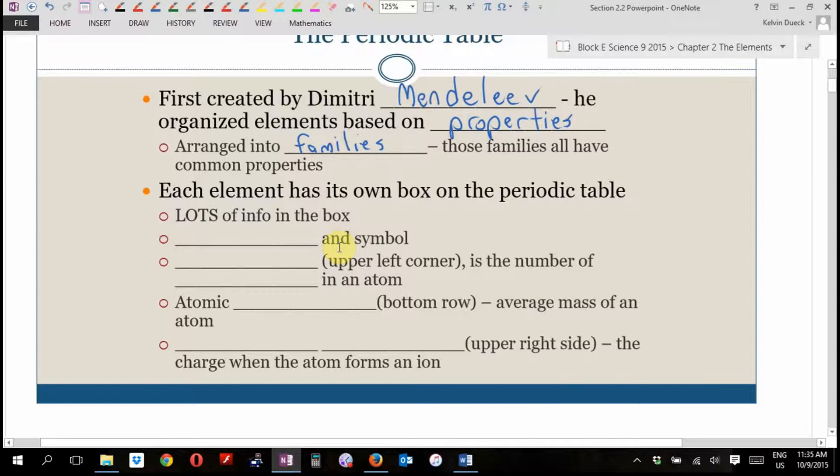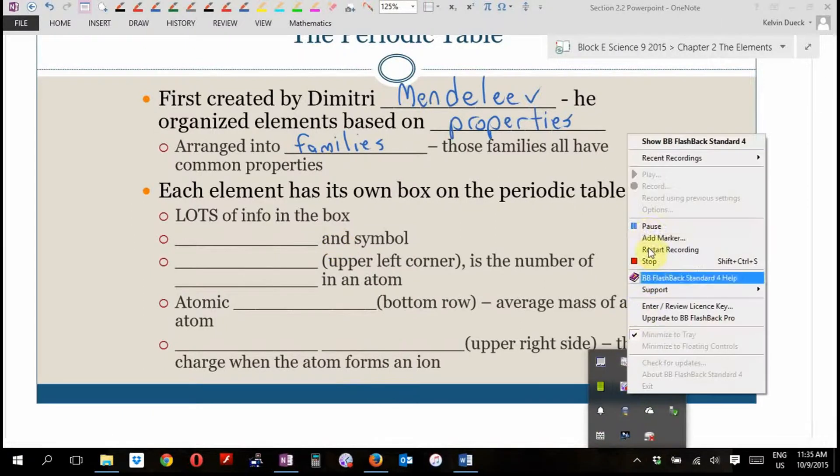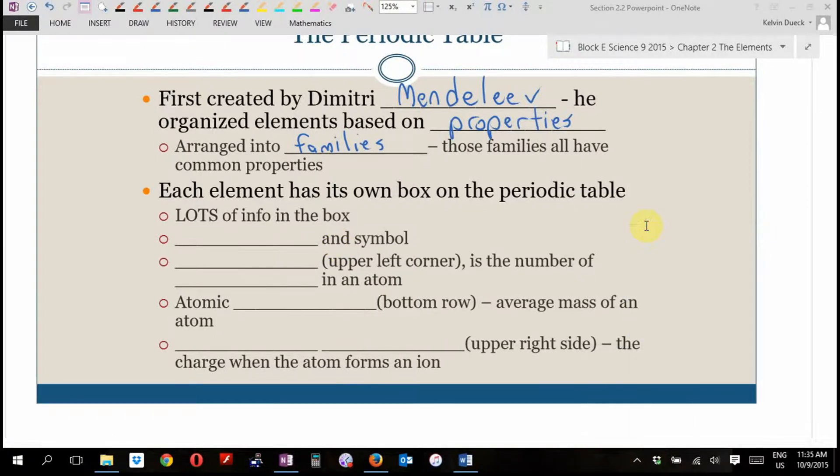Next to it, column two also has a name, and it sounds very similar to alkali, but not quite. Alkaline. Those are all one family. Then if you go to the very far right-hand side, the very right-hand column, that one has a name. The noble gases. We'll talk about why they're called the noble gases. And then the one just to the left of the noble gases, the second last column, those are the halogens. Those ones are terrifying.